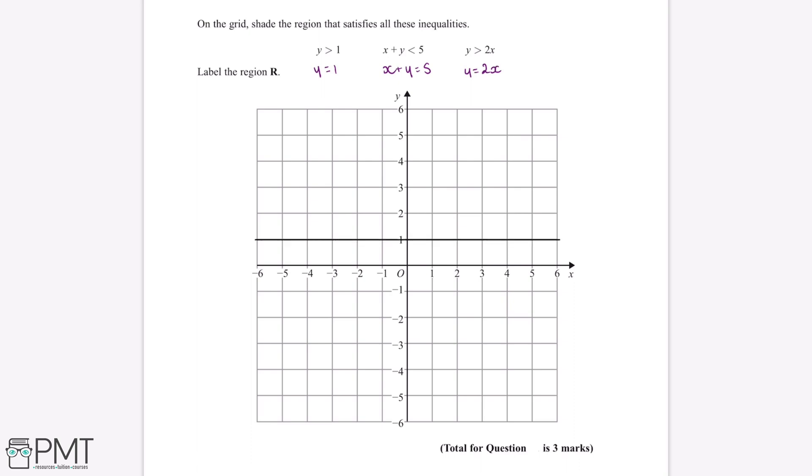Now the second equation, x plus y equals 5, what we can do is substitute some values into this. So when x is equal to 0, 0 plus y will be equal to 5, and therefore when x equals 0, y will be equal to 5. So we can mark this point onto our grid.